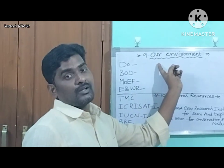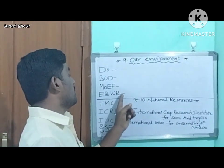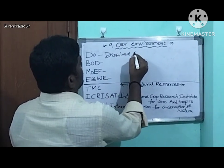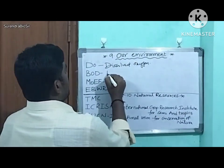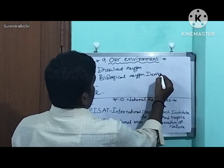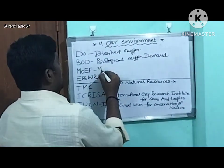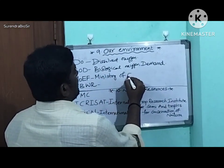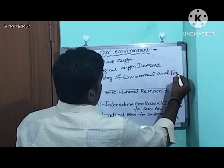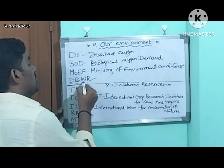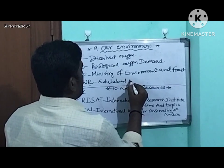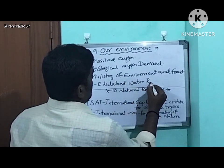The ninth chapter is Our Environment, which has more abbreviations. DO — Dissolved Oxygen. BOD — Biological Oxygen Demand. MOEF — Ministry of Environment and Forest. EBWR — Etipothala Water Reservoir.